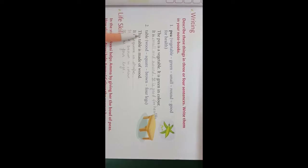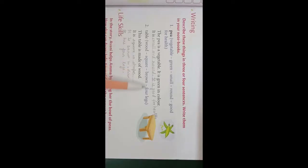Number 2 is table. Use the words wood, square, brown, and four legs. The sentences are: This table is made of wood. It is square in shape. It is brown in color. It has four legs. Write these sentences in your book.